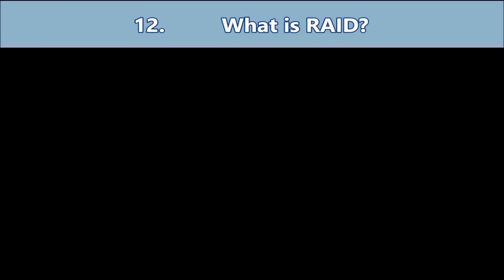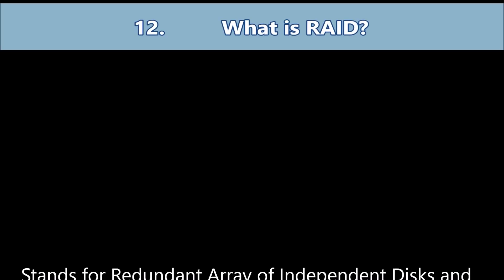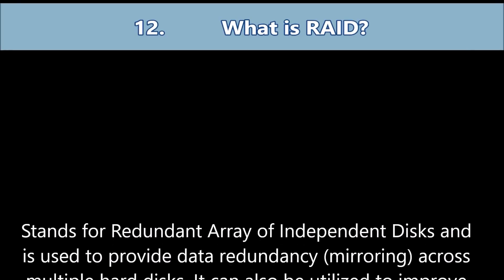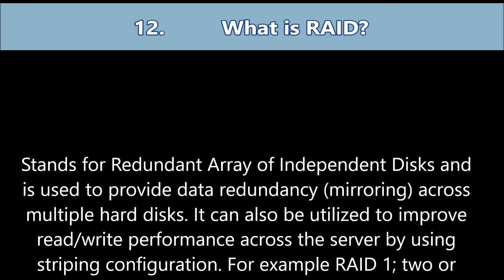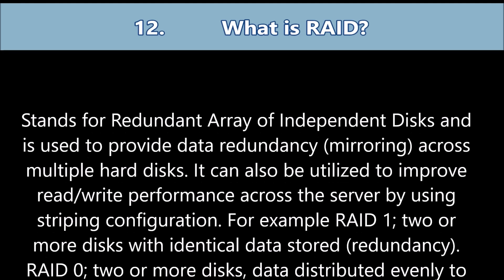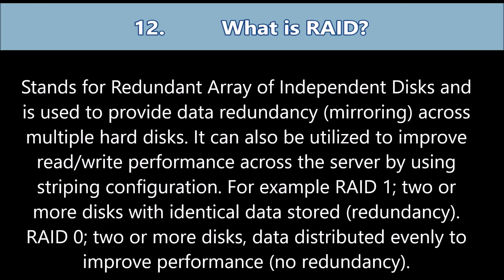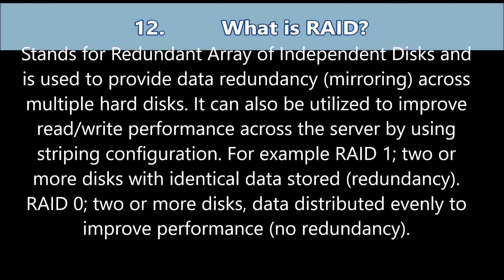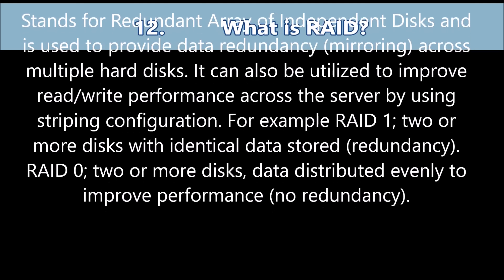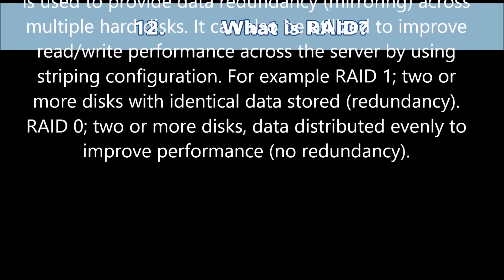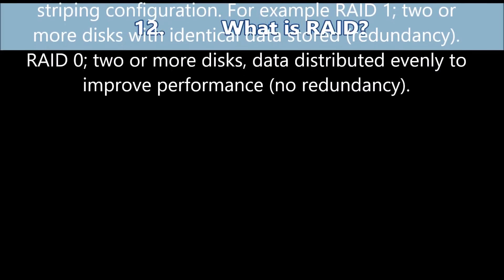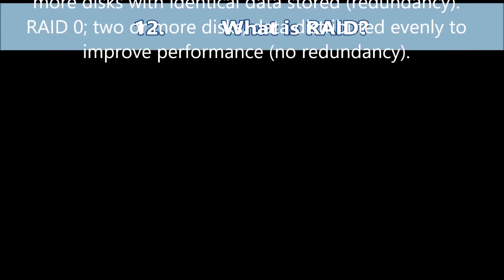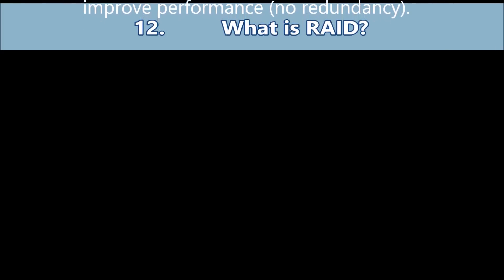Question number twelve: What is RAID? RAID stands for Redundant Array of Independent Disks and is used to provide data redundancy mirroring across multiple hard disks. It can also be utilized to improve read-write performance across the server by using a striping configuration. For example, RAID 1 uses two or more disks with identical data stored for redundancy. RAID 0 uses two or more disks with data distributed evenly to improve performance, but with no redundancy.